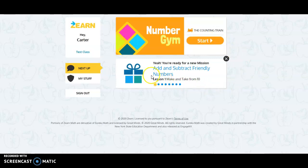Down below the Number Gym you'll see it says you're ready for a new mission. The name of the mission that you're going to start is called "Add and Subtract Friendly Numbers." The missions are like the units, so unit one is "Add and Subtract Friendly Numbers" and below that it will show you what lesson you are on.